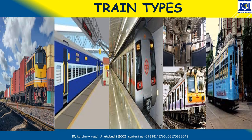The first type of train is the goods train. Goods train is used to move different kinds of goods from one place to another. The second train is the passenger train. We use passenger train to travel to different cities and villages. The third type of train is the metro train.